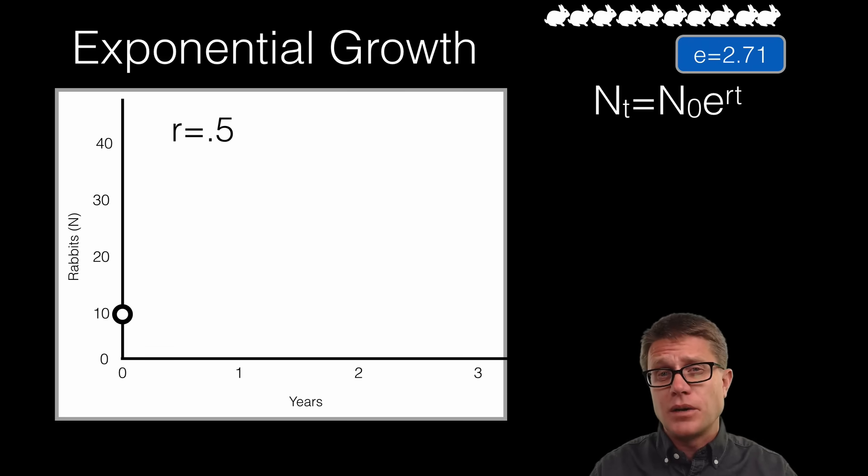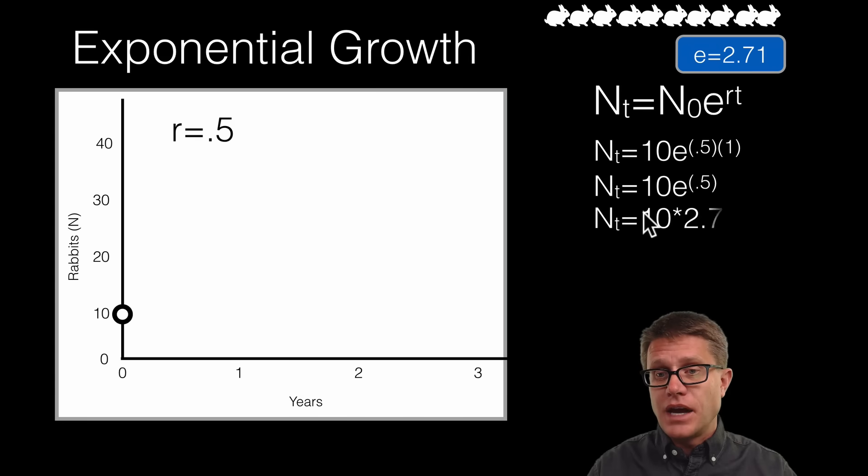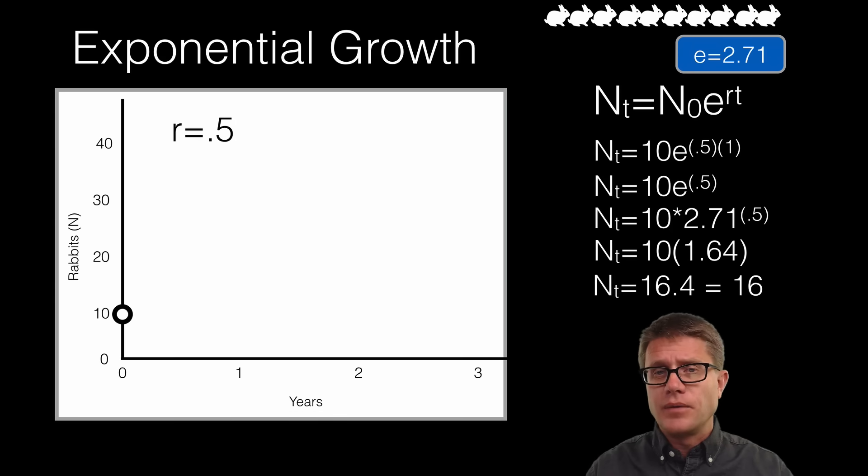And so let us say we want to figure out what is going to happen to the population in year 1. So if we want to figure out, we started at 10, what is going to be the population, probably at year 1, we just use this equation. So E is going to be the same. So what is going to be our r value? Our r value will always be 0.5. That is that intrinsic growth rate. What is our T value? Our T value is going to be time. What is our initial population? It is going to be 10. So if I expand that a little bit we are simply multiplying 1 times 0.5, 1 year times that growth rate. And so that is going to be 10 times 2.71, again that is E raised to the 0.5 power. So that is really like taking the square root of 2.71. And so that is 1.64. So if we work that out that is going to be around 16 rabbits after 1 year.